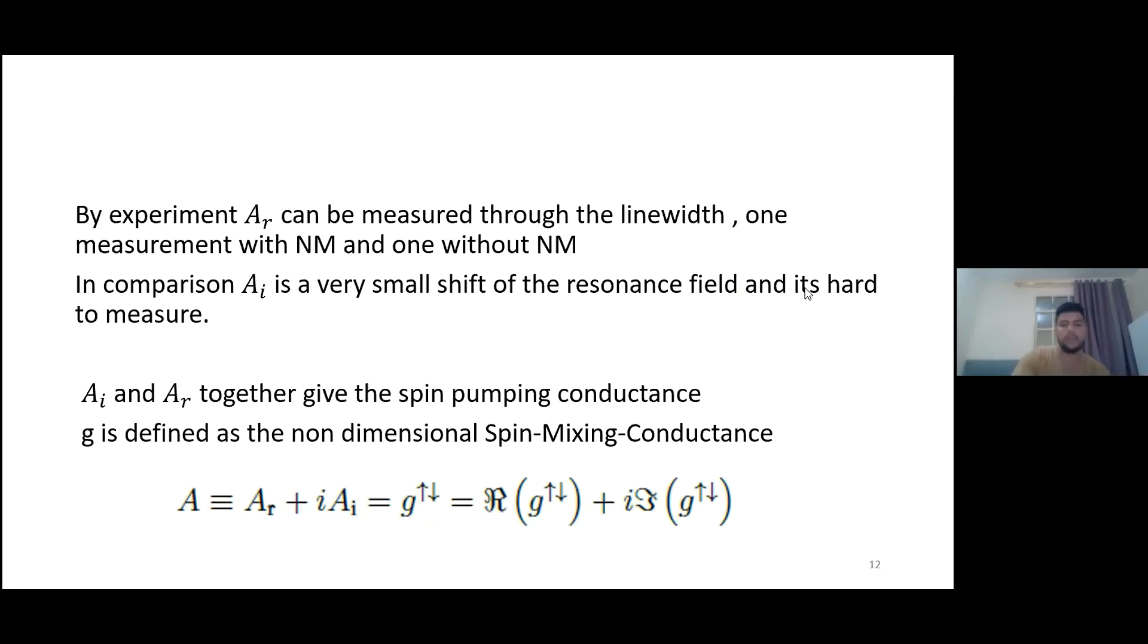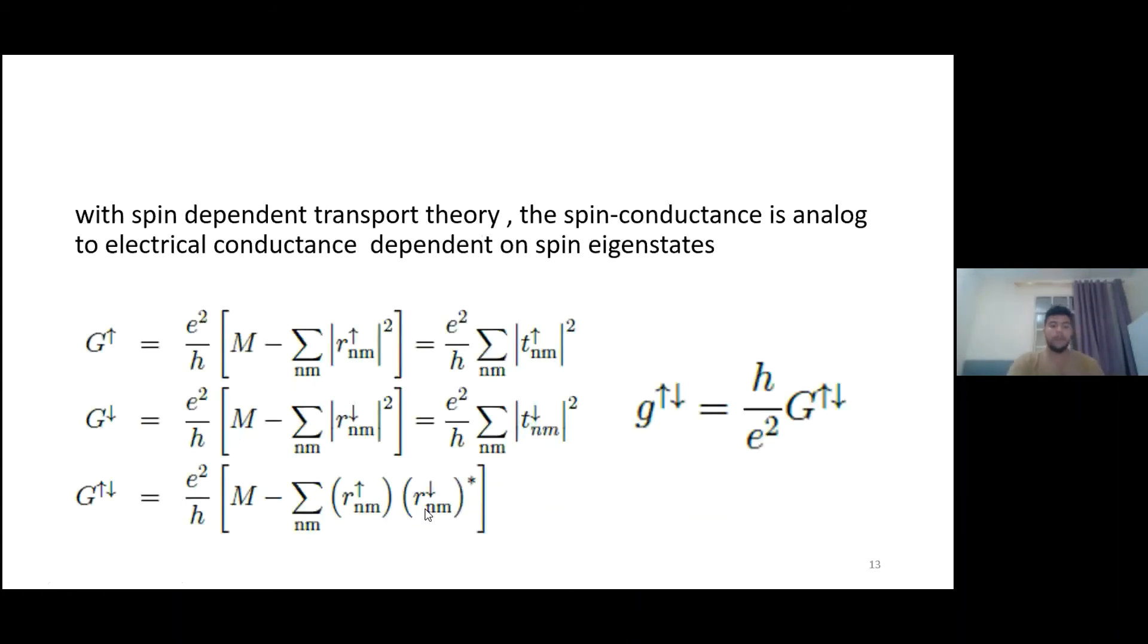AI and AR gives us this spin pumping conductance. And it is defined by the spin mixing conductance, G. We can also define a bigger G with that because of the spin-dependent transport theory. The spin conductance is analog to the electrical conductance. And it's dependent on the eigenstates. And what we see here is G up and G down describe the spin conservation transport through the transmission area. And the G total is the total transfer of the spin momentum between the ferromagnetic layer and the normal metal layer. And because of that, we can describe the big G with a small g because the spin current is just the transport of the spin momentum.